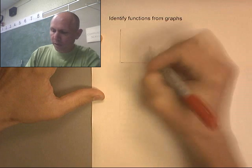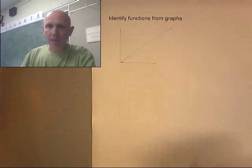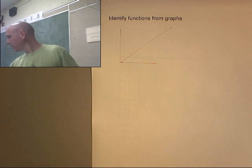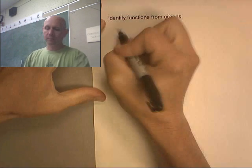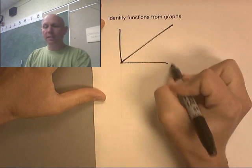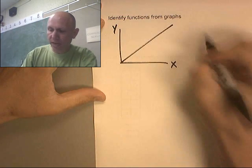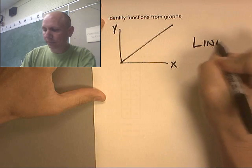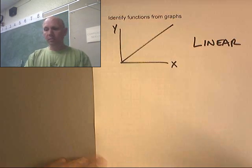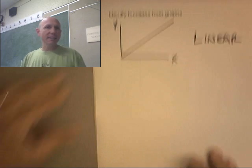There we go. That, and it's time for a new marker, that's a linear function. Let's make this a little bit darker. There we go. That is considered a linear. This is your x-axis, that's your y-axis. This is linear. It can go in different directions, but if it's making a line, it's a linear function. Our next one.